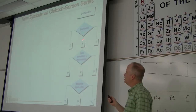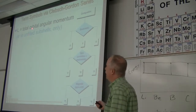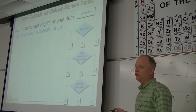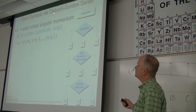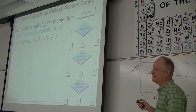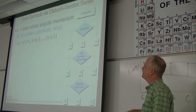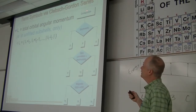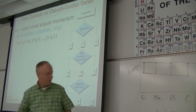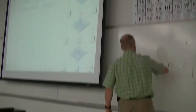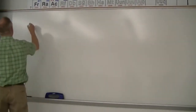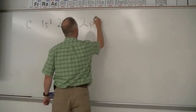There are three parts to coming up with the term symbol. Capital L is the total orbital angular momentum — and to remind you, it's electrons in unfilled subshells only. This is called the Clebsch-Gordon series — and this L is a series made up of little l's.